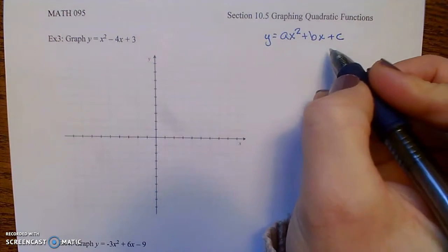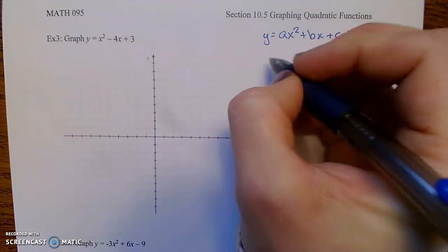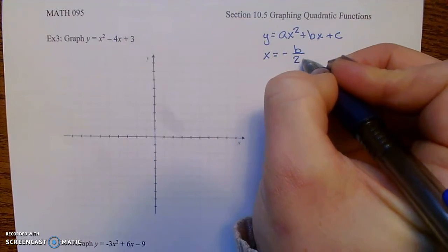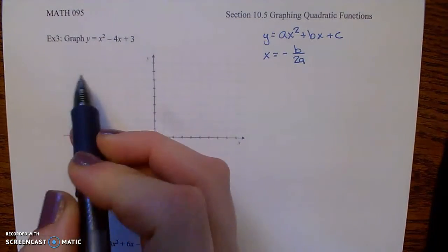And the vertex, if you're given the equation in standard form, the vertex has x-coordinate negative b over 2a. So that's what I like to do first.